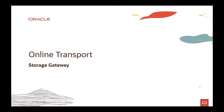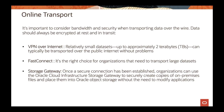On this part we're going to cover online transport and the storage gateway side. For online transport, there are a couple of ways you can move data from your on-premises environment to the cloud. Online transport relies on the internet connectivity or bandwidth you have on-premises to allow connection from your location to the cloud.